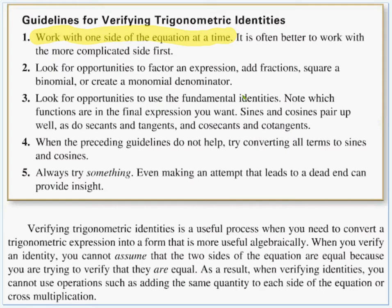Number three, look for opportunities to use those fundamental identities. Note which functions are in the final expression that you want. Sines and cosines pair up nicely, as do secants and cosecants and cosecants and cotans, because those are in the Pythagorean identities together. Number four, when the preceding steps do not help, try converting everything into sines and cosines. That's my favorite technique. I usually try that first. Number five, always try something. Even if you make an attempt that leads to a dead end, it might provide some insight. Back up and try a different path.